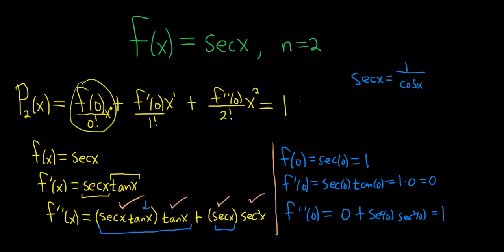f prime of 0 is 0, so that whole piece goes away. And then f double prime of 0 is 1, so we just get plus 1 over 2 x squared, because 2 factorial is 2. So we just get 1 plus x squared over 2. And that should be the final answer to the question.